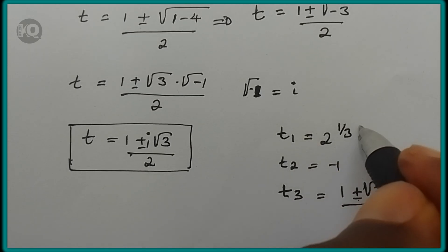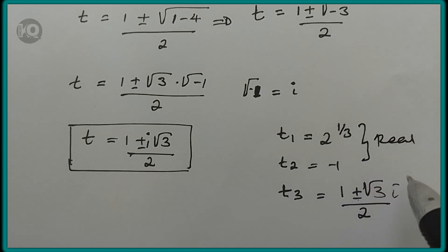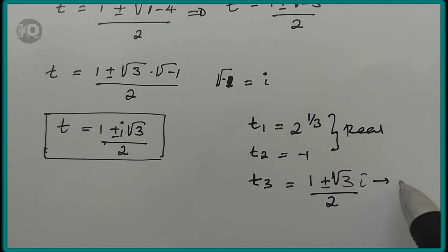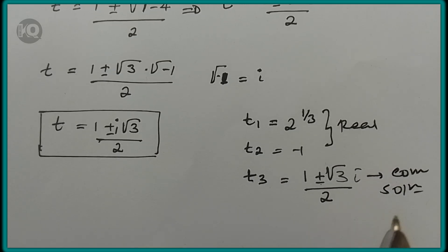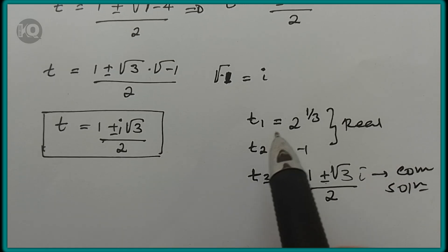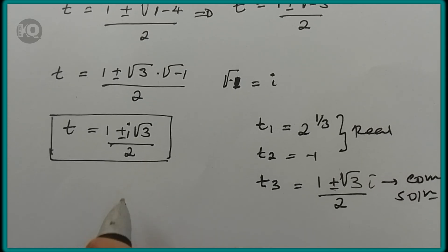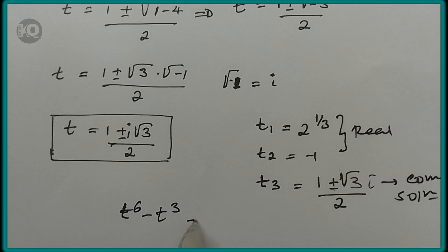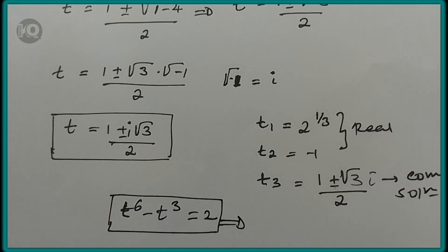So these are the two real solutions and one complex solution. You can verify by substituting the values of t into the equation t to the power of 6 minus t to the power of 3 equals 2. Thank you very much for watching. Have a nice time. Bye-bye.